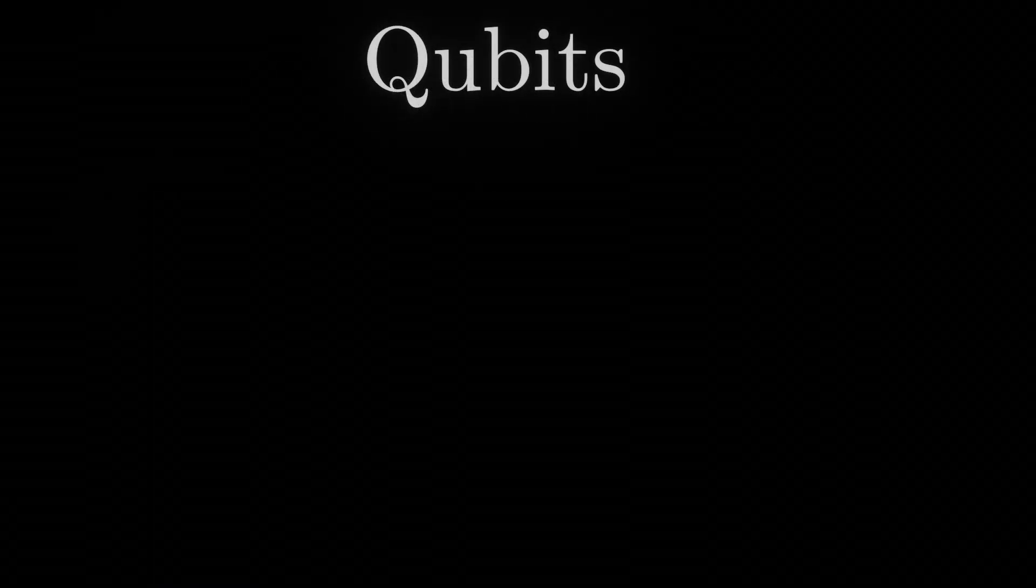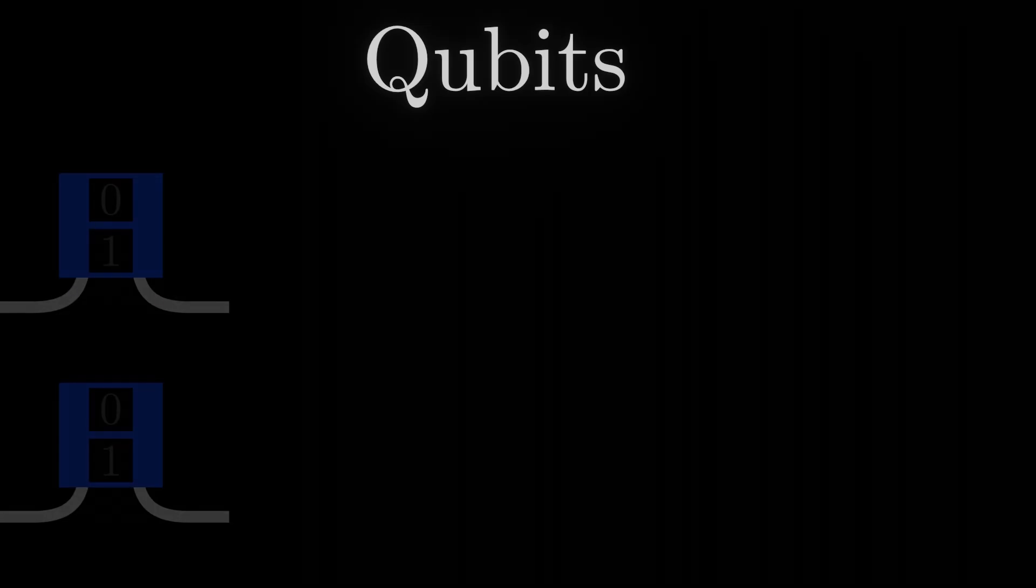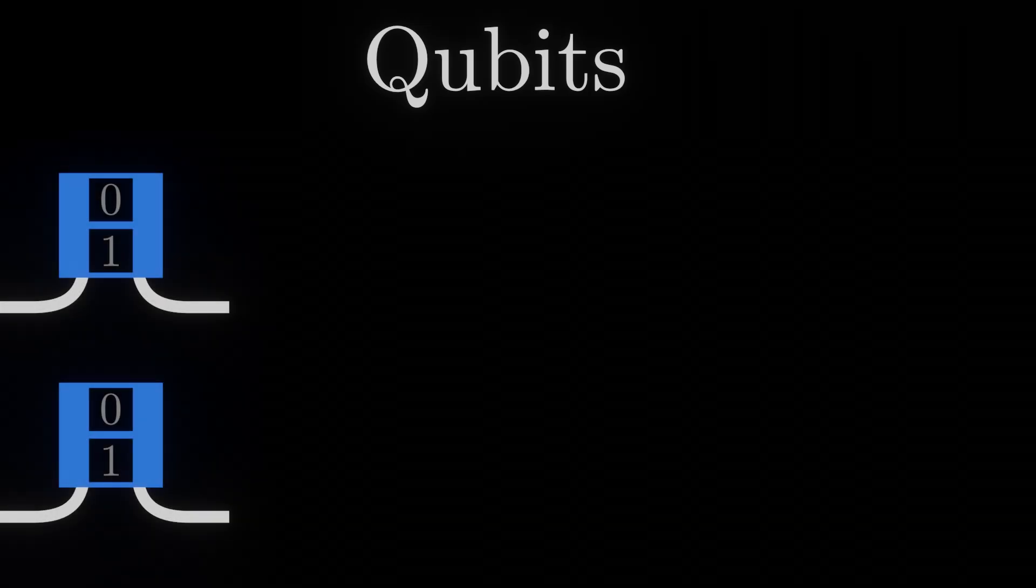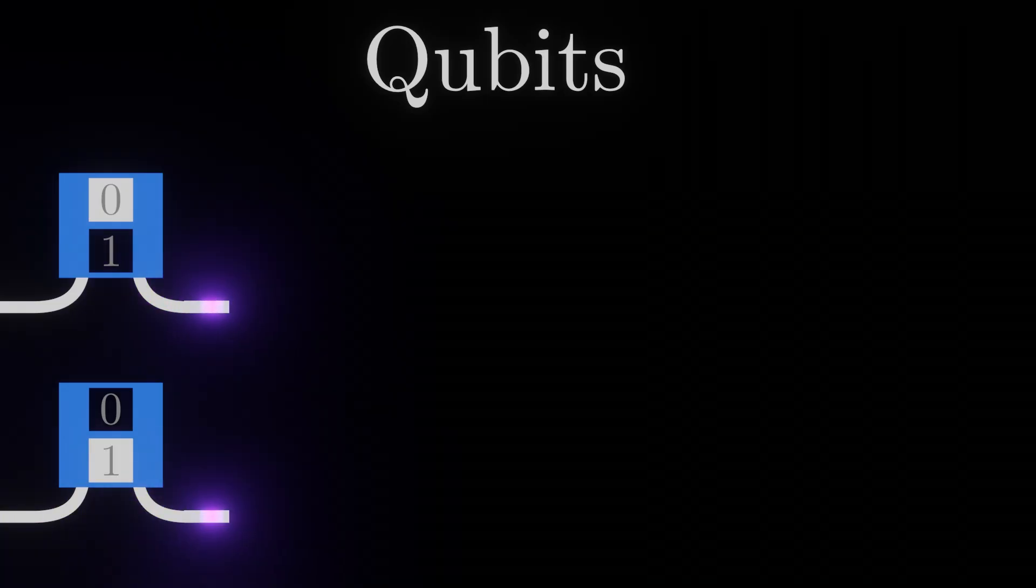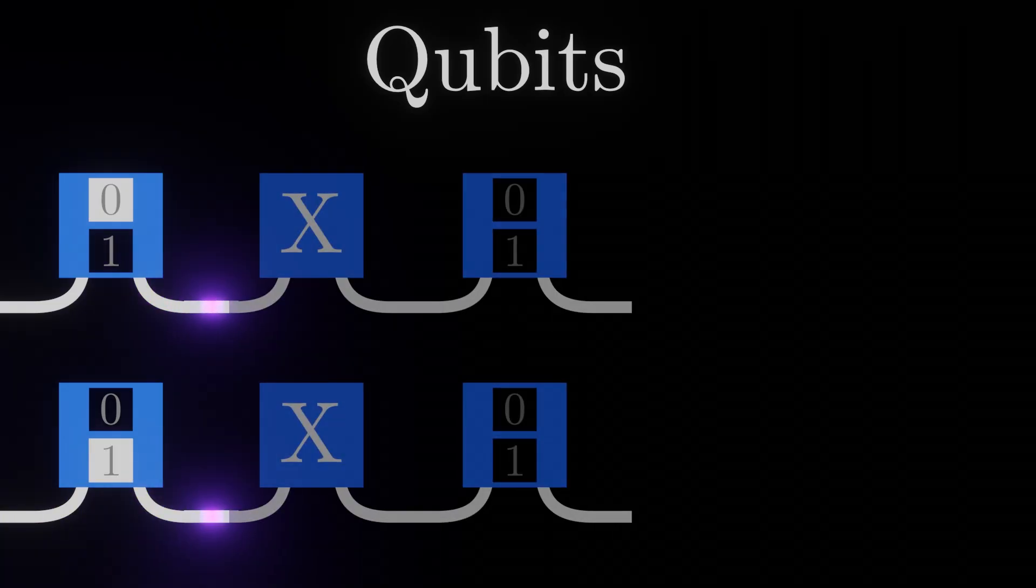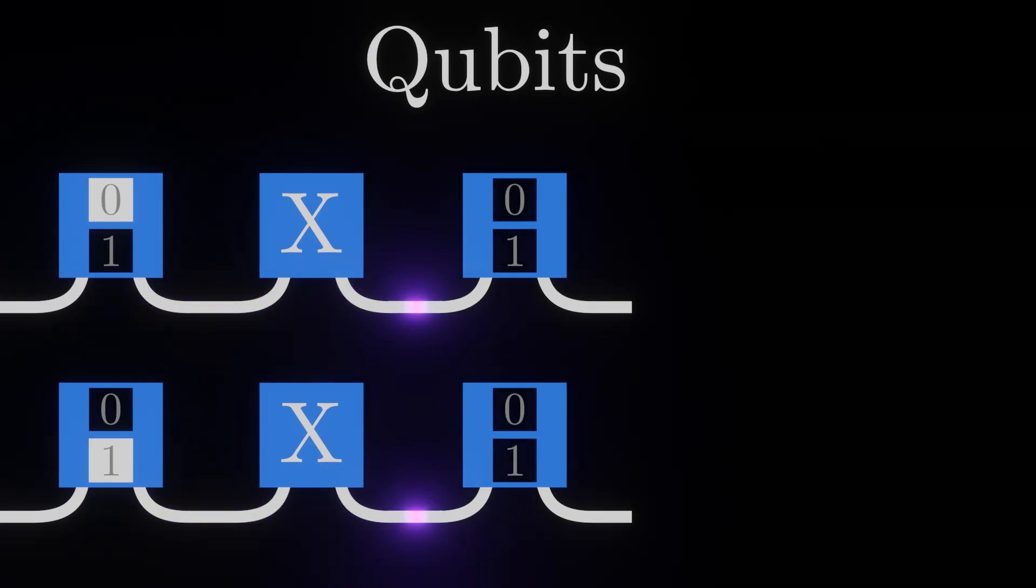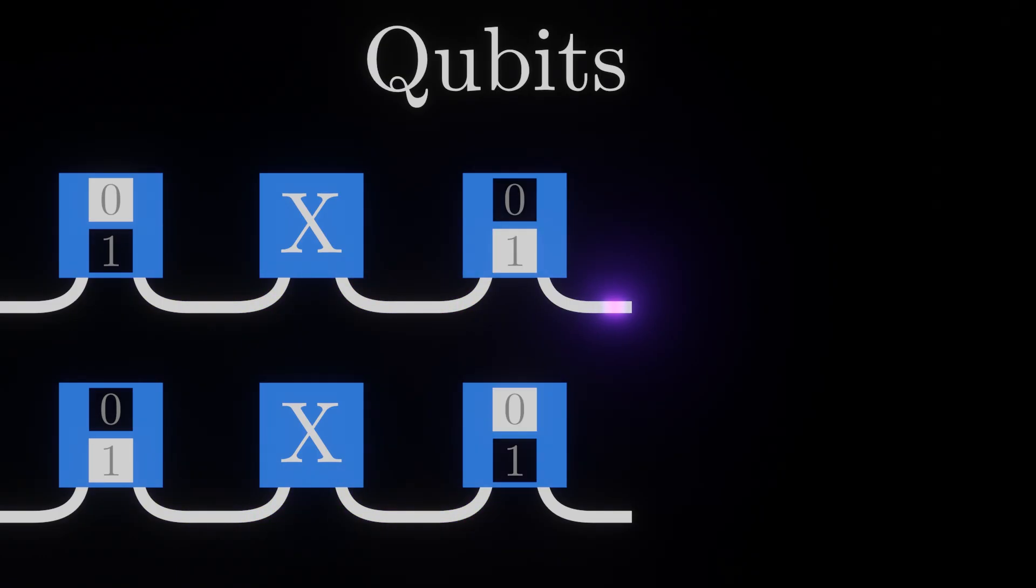Qubits, at first glance, appear rather similar. A measurement gate will inform us that a qubit is either 0 or 1. By using the quantum version of the NOT gate, labeled with the letter X, we can convert a qubit measured as 0 to a qubit measured as 1.